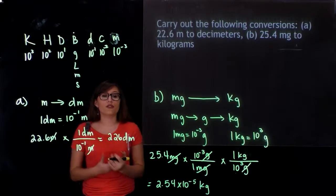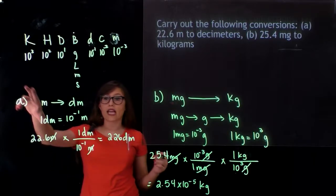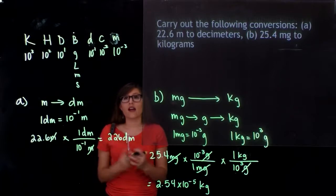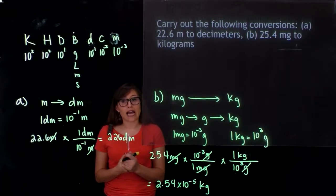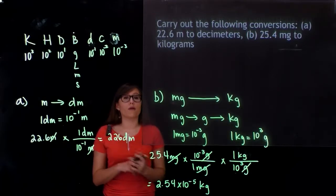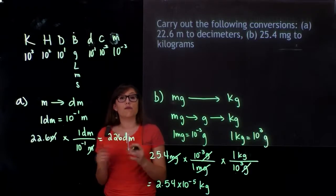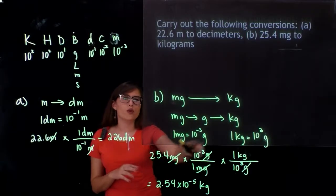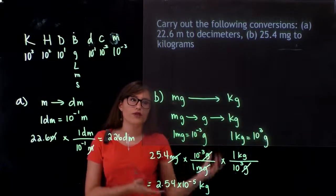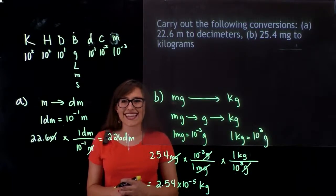Make sure when you do this problem, you're walking through the steps and using any tools you can, such as King Henry died by drinking chocolate milk, and you're converting to the appropriate units. If you're going between multiple units, make sure you always convert to your base unit first, then convert to your next unit after. Thank you.